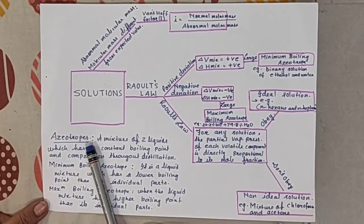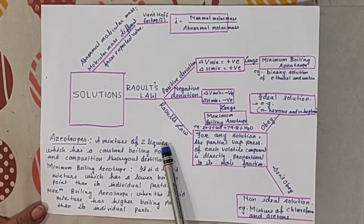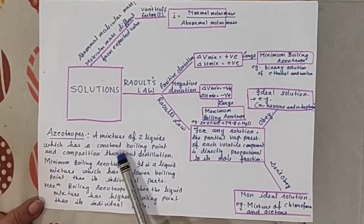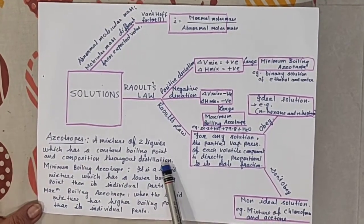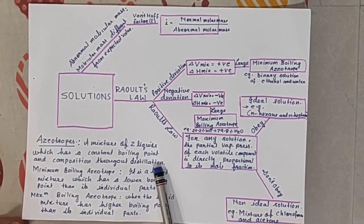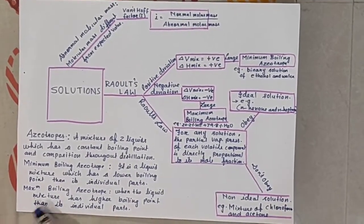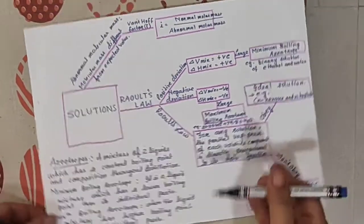Small i formula we have read. i is equal to normal molar mass divided by abnormal molar mass. Now, I will tell you again, what is azeotrope? A mixture of two liquids which has a constant boiling point and composition throughout the distillation is known as azeotrope.